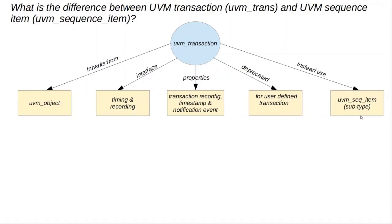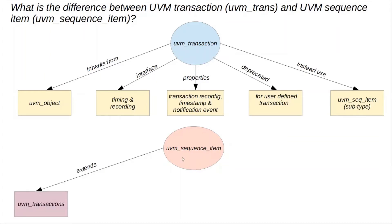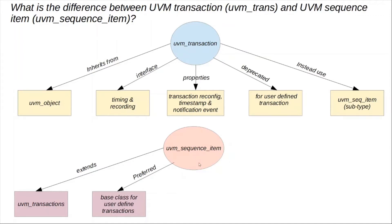Instead, we use a subtype of a UVM transaction which is the UVM sequence item. UVM sequence item extends from a UVM transaction, which ultimately then goes to a UVM object. This is the preferred way for any user defined class or transaction essentially. Whenever we have a user defined transaction, we always extend it from a UVM sequence item now.